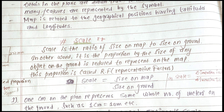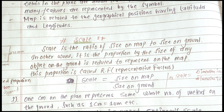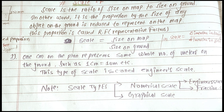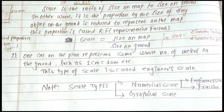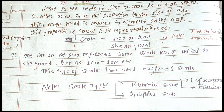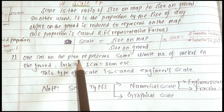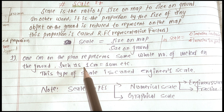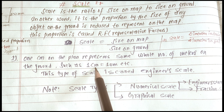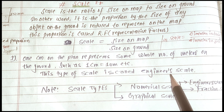There are two types of scale: the numerical scale and the graphical scale. The numerical scale has two types: the engineering scale and the fraction scale. The engineering scale expresses scale as, for example, 1 cm on the plan representing some number of meters on the ground.